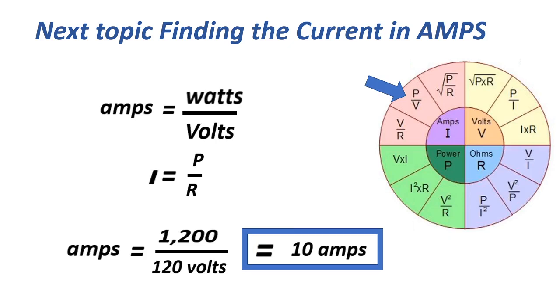The next formula for current: amps equals watts over volts, or I equals P over V, equals 10 amps.